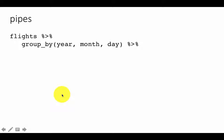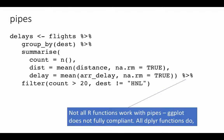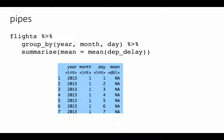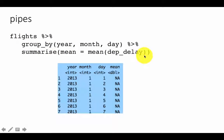Now we are going to redo some of the earlier examples using pipes. We are taking flights, grouping it by year, month, and day, and creating a summary of departure delay — all in a pipe chain. Earlier we did this in three separate steps; now we are doing it with a pipe and it makes it a lot simpler.